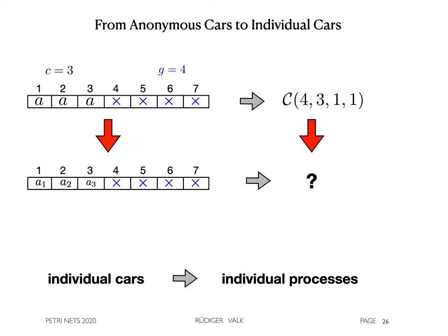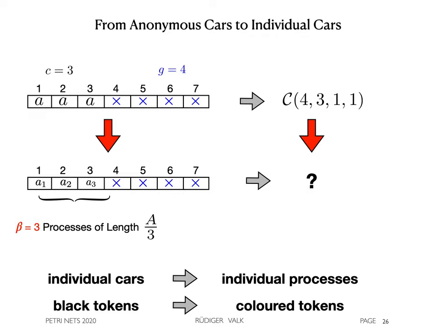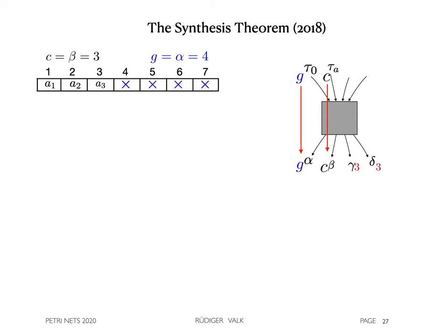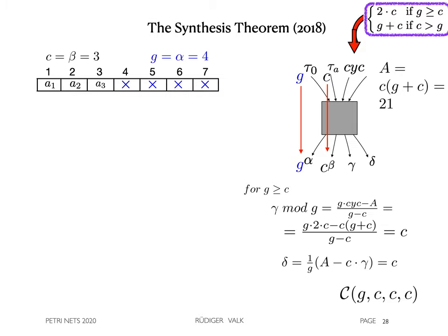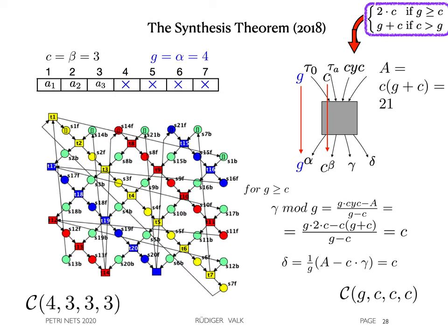Now, we switch from the case of anonymous cars to the case of individual cars. Each car performs as separate processes. Hence, in this example, we obtain a number of beta equals 3 processes of length capital A divided by beta. This corresponds to a switch from black tokens in Petri nets to colored tokens. To apply the synthesis theorem, we use the values for alpha and beta as before and our result for circular traffic queues for the number capital A of transitions. Here is the formula for the length of a minimal cycle CYC that will be motivated afterwards. With these values, the synthesis theorem is applied in a non-numerical form to obtain the result, namely the cycloid GCCC in general and 4333 in this example.